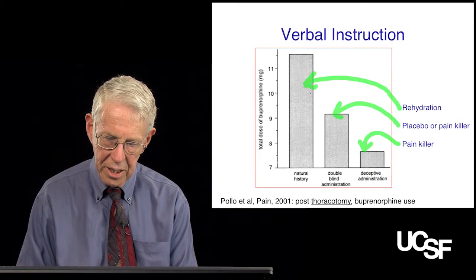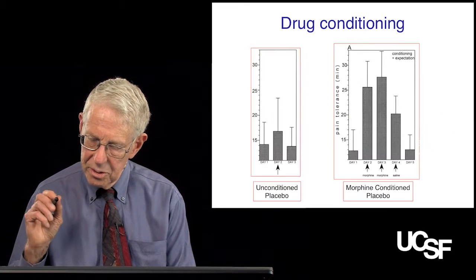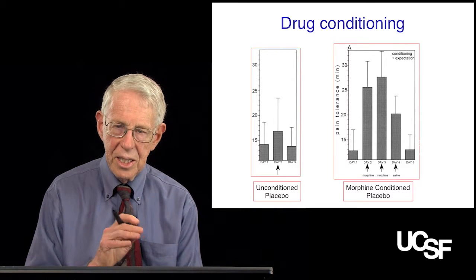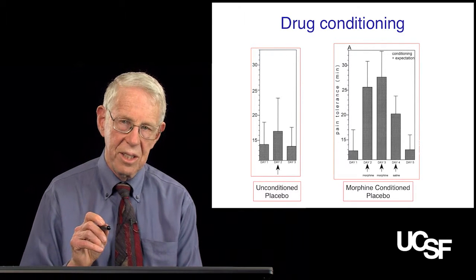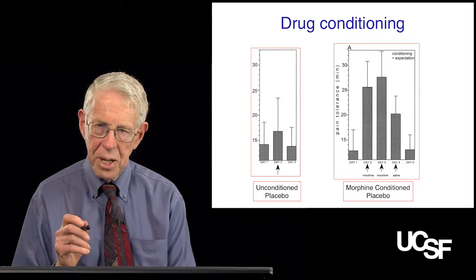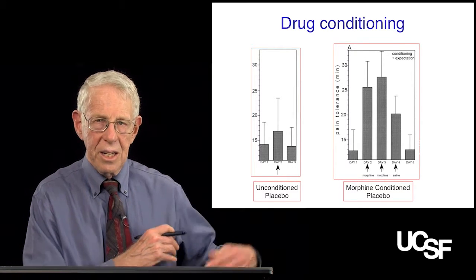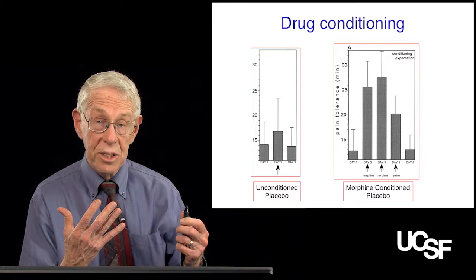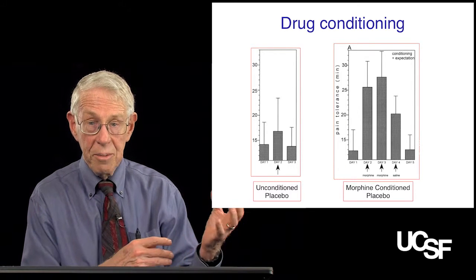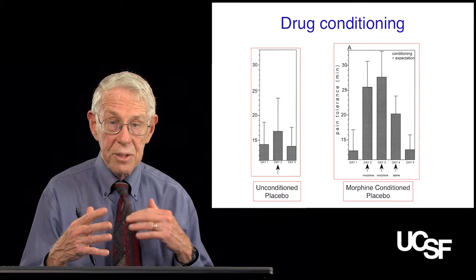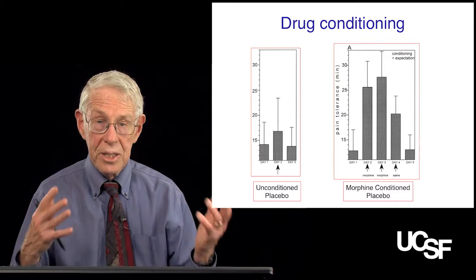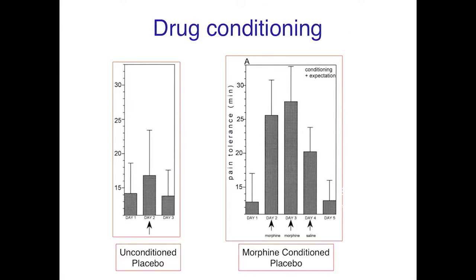Now let's move on to another way of doing a similar study, but with a different type of conditioning — a different type of expectation. In this case, these were normal volunteers undergoing tourniquet pain. A blood pressure cuff was put on the arm and pumped up above the systolic pressure, cutting off blood supply to the limb, and then they were told to exercise. Normally, after 10 to 15 minutes, it becomes very painful, and subjects were told to stop when they couldn't take the pain anymore. The average subject could last about 15 minutes with no treatment, as shown here.